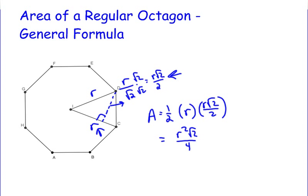Multiplying by eight, the denominator cancels to leave 2, giving us a clean formula for the area of an octagon given the radius: A = 2r²√2.